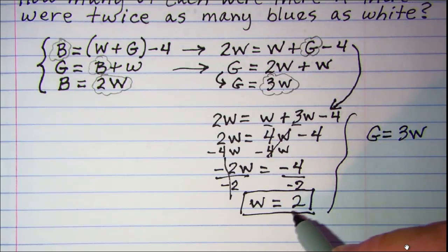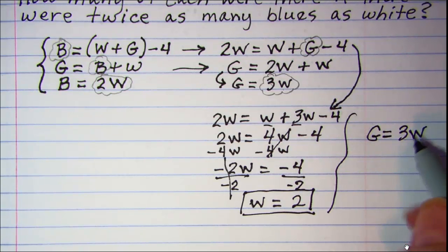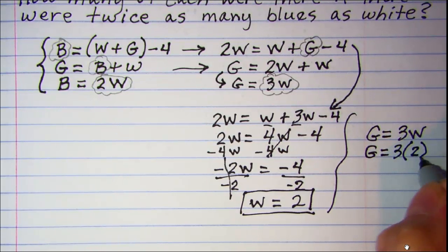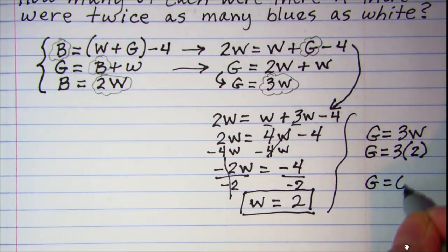So I'll substitute 2 in for W. And I get G is equal to 3 times 2. So G is equal to 6.